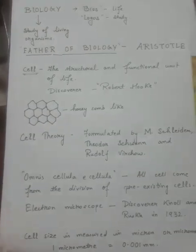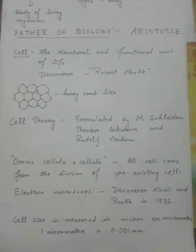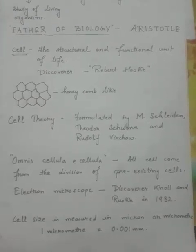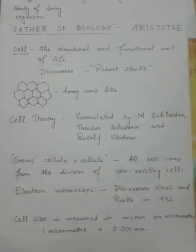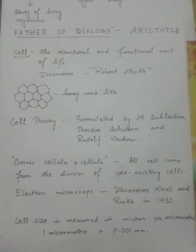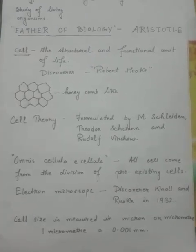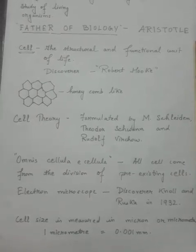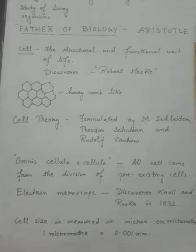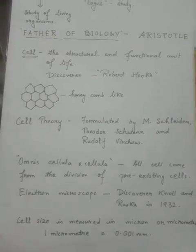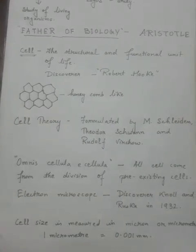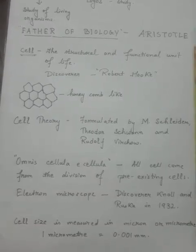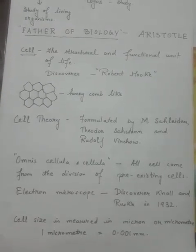The cell theory was formulated by three scientists: M. Schleiden, Theodore Schwann, and Rudolf Virchow. Please learn the spellings of these scientists carefully, as they are a bit tough — break them word by word and then memorize. The Latin sentence omnis cellula e cellula means all cells come from the division of pre-existing cells.